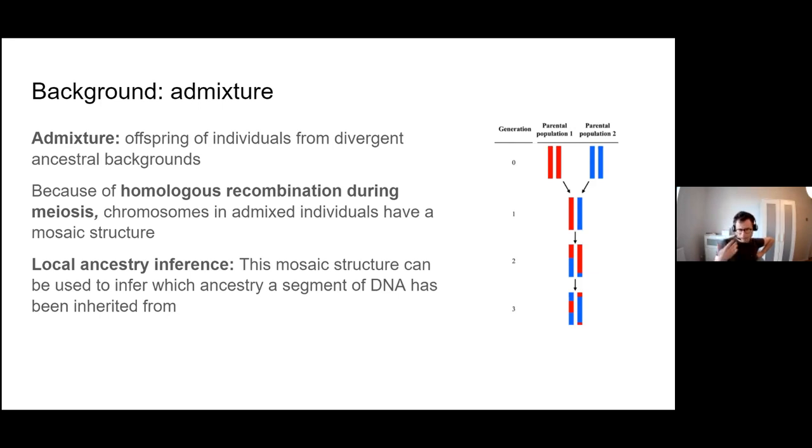Everyone is admixed to some extent. When we talk about admixture in terms of studying human genomics and admixture mapping, we're really thinking about recent admixture. African-Americans are an amazing example of this. Admixture occurs because of homologous recombination during meiosis, which is the exchange of genomic material between maternal and paternal chromosomes. What admixture results in is this mosaic structure where if you scan along the chromosome of an admixed individual, you can see that the individual haplotype blocks have got different ancestral origins.